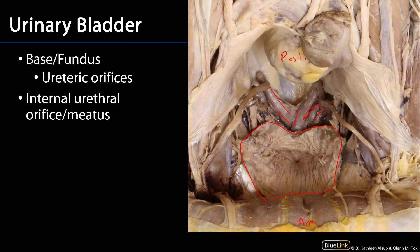We can also see the ureters moving toward the fundus of the bladder, and the ureteric orifices are there and there. There's the interureteric crest, and we have the internal urethral orifice or meatus right there. So this would be the trigone of the bladder, and there's the uvula of the bladder.